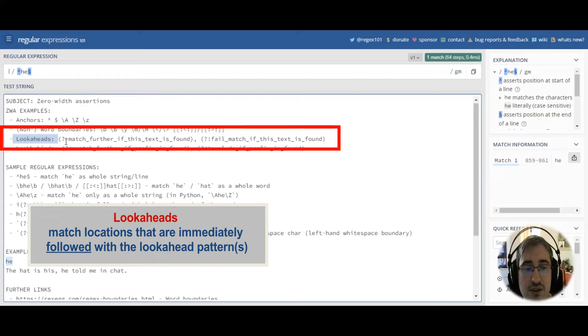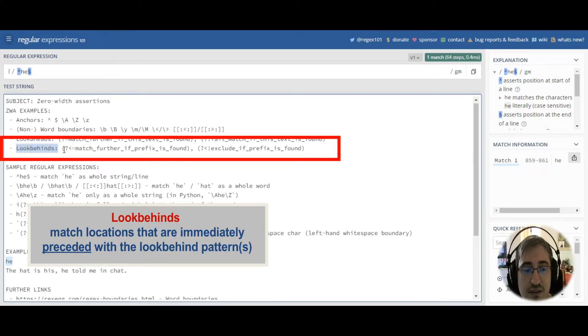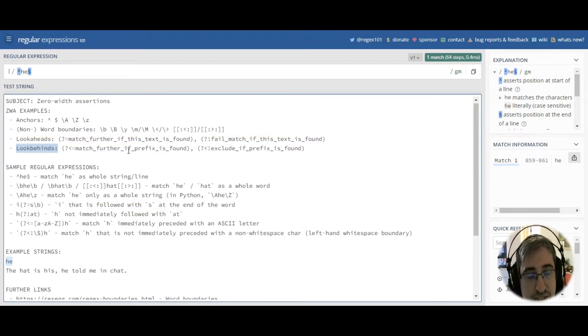Look-aheads usually require some text to be present or absent immediately to the right of the current location. And look-behinds mean that there should be some pattern immediately to the left of the current location. Let's have a look at some examples.